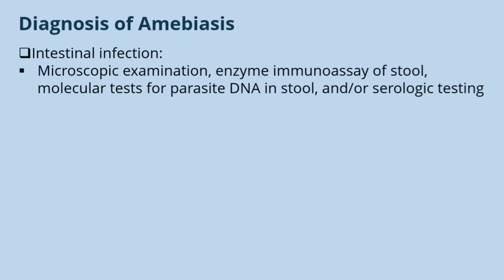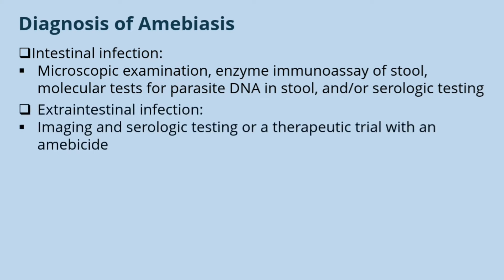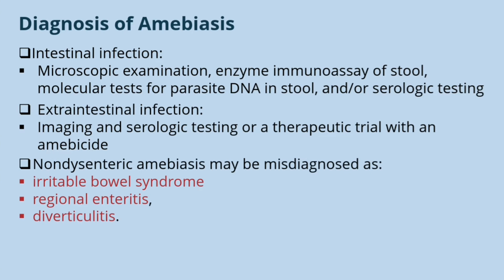Now let's discuss diagnosis of amoebiasis. In case of intestinal infection: microscopic examination, enzyme immunoassay of stools, molecular testing for parasite DNA in stool, and serological testing are used. In case of extra-intestinal infections, imaging and serologic testing or a therapeutic trial with amoebicide are used — typically CT imaging in cases of liver abscess. Non-dysenteric amoebiasis is important because it may be misdiagnosed as irritable bowel syndrome, regional enteritis, or diverticulitis.